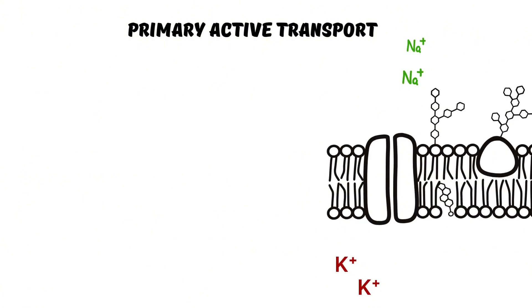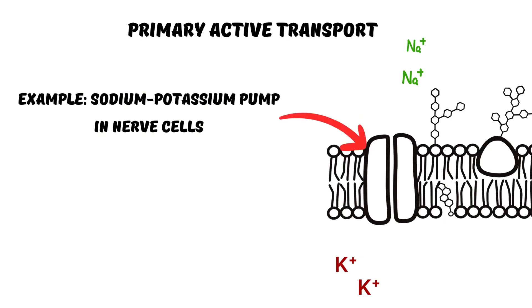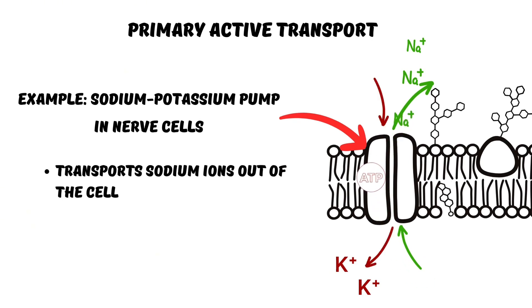For example, cell membrane has some carrier proteins known as sodium-potassium pumps which actively transport sodium ions out of the cell and potassium ions into the cell.